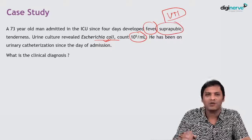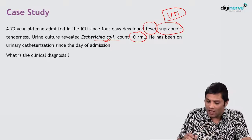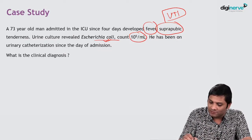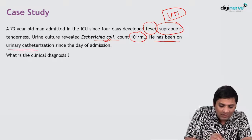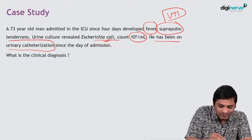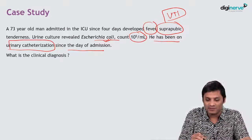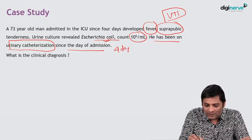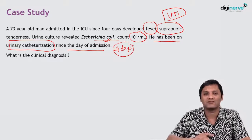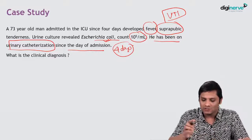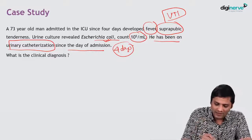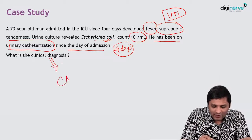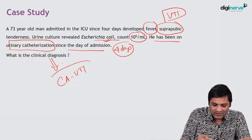It is found that the person has been on a urinary catheter since the day of admission — that means 4 days of urinary catheterization. Therefore it is a typical case of the clinical diagnosis: CAUTI, also called catheter-associated urinary tract infection.